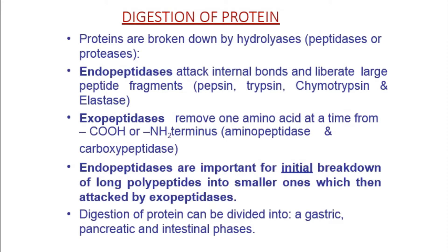Proteins are broken down by enzymes called peptidases or proteases, which are of two kinds. The first kind is endopeptidases — these include enzymes such as pepsin, trypsin, and chymotrypsin. They are mainly produced in the stomach and pancreas, and their role is to break down the bonds between peptides, breaking them into smaller parts.